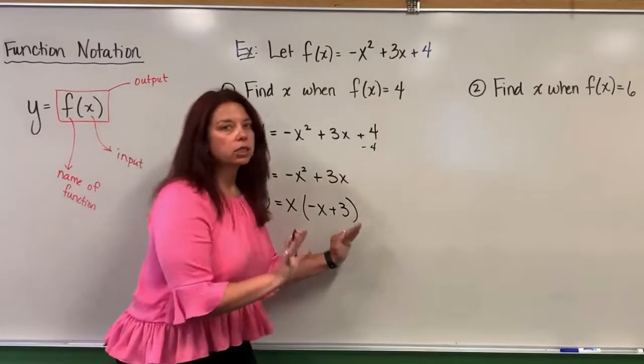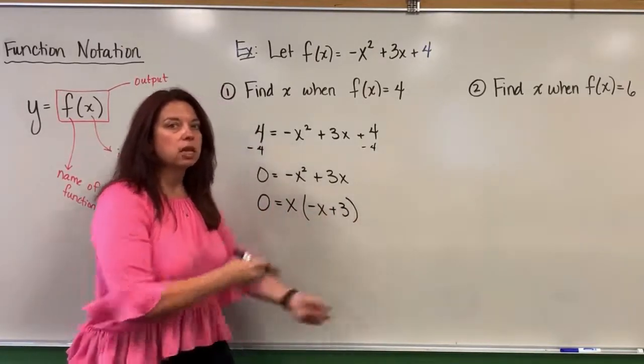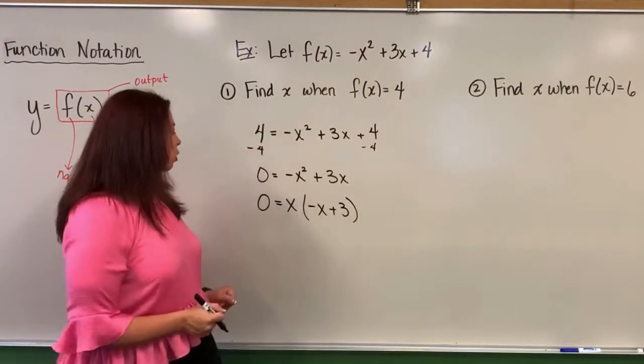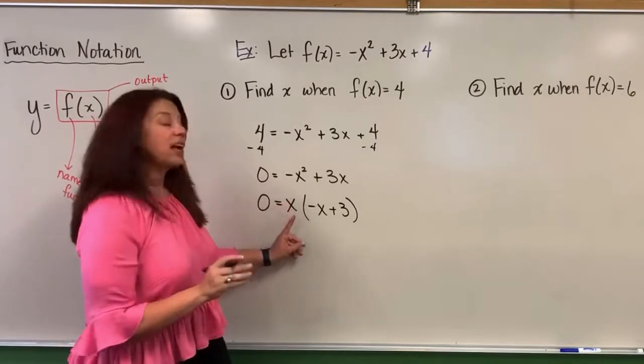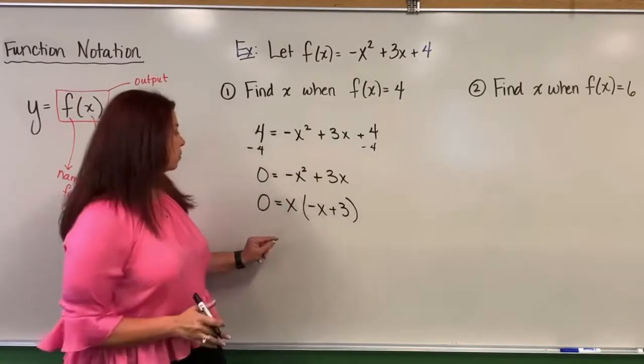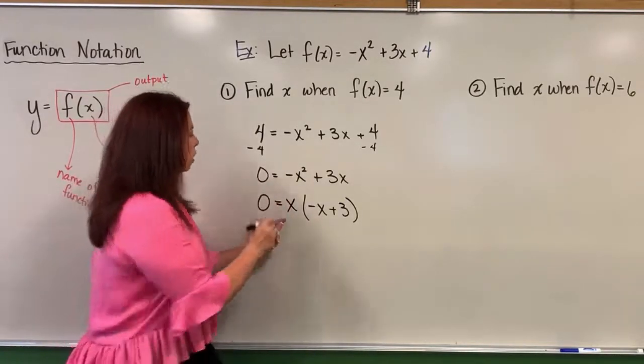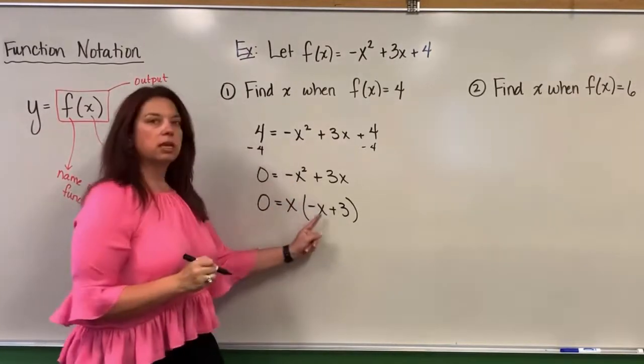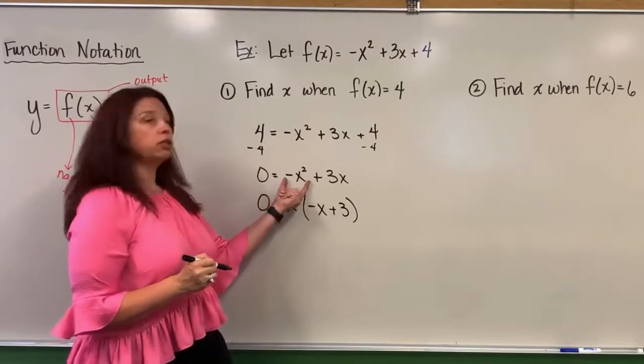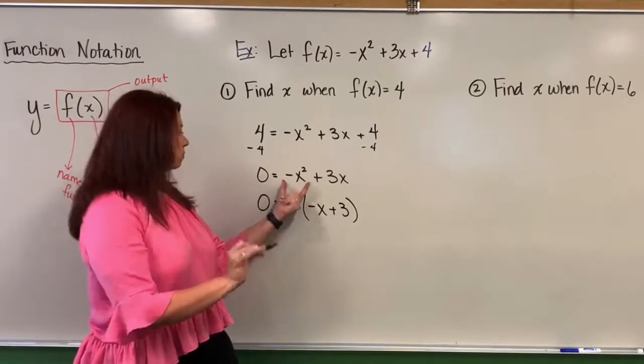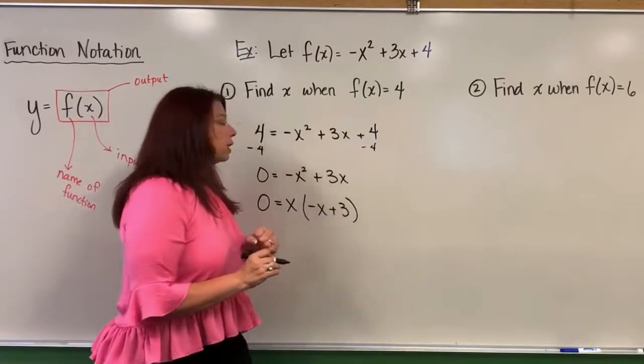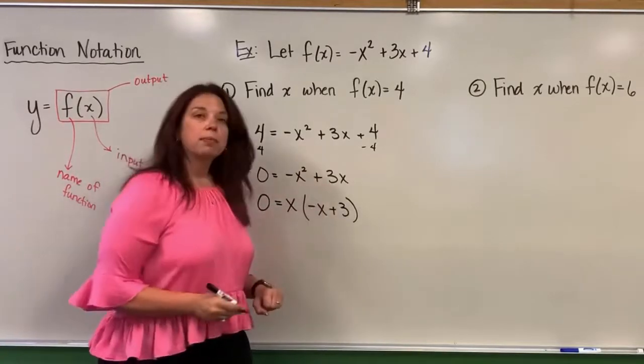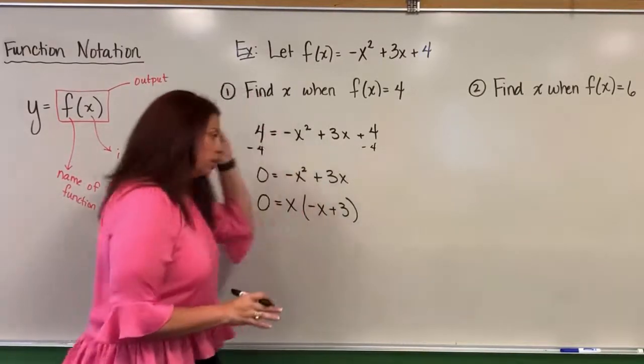And I'm going to pause for a second and just say double check that we did this factoring out the GCF thing correctly because if I didn't, obviously, everything after this step is incorrect. So just to double check, do a little mental math here. If I distribute x times the negative x that's sitting here, I do unpack a negative x squared. Awesome. Distribute the x on the 3. When I do that, I do unpack a positive 3x. Awesome. So everything is good to go.